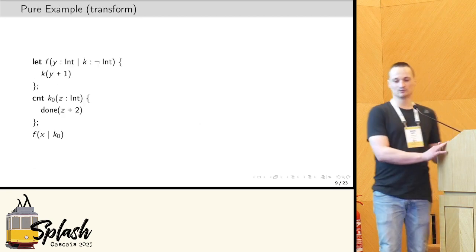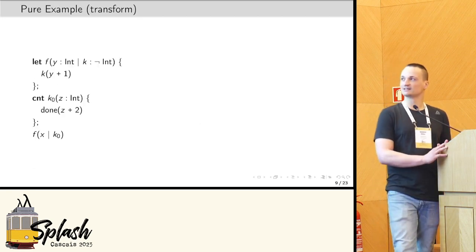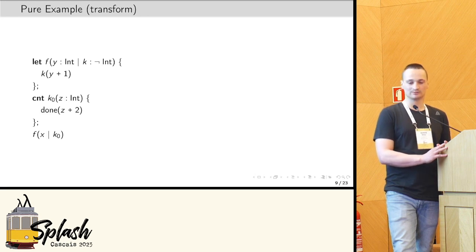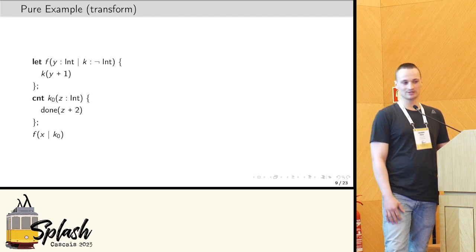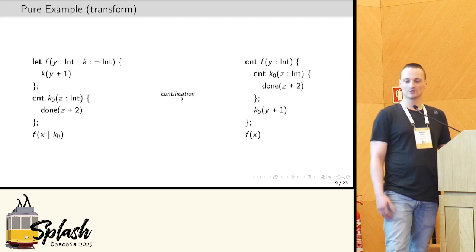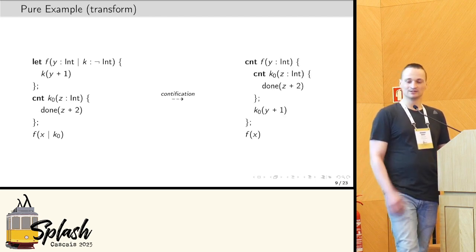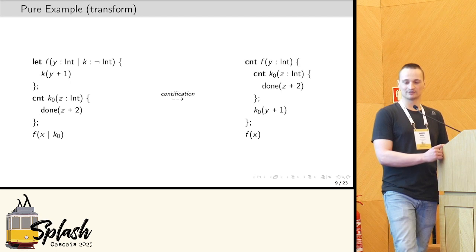Okay, so concretely, let's look at the initial example again. So this is the program in continuation passing style, and now we can do a transformation, say quantification, which in CPS amounts to specializing the function f here to its continuation argument at the call site.